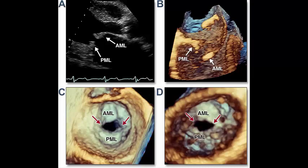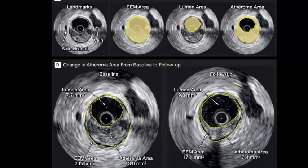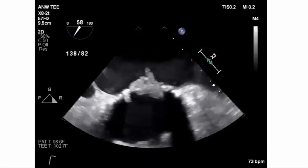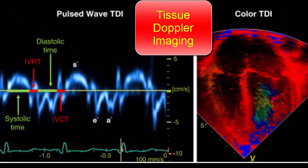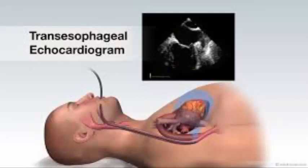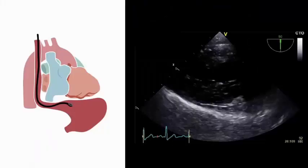Advanced echo techniques include three-dimensional echocardiography, intravascular ultrasound that defines vessel wall abnormalities and guides coronary intervention, intracardiac ultrasound that provides high-resolution images of cardiac structures, and tissue Doppler imaging that quantifies myocardial contractility and diastolic function.